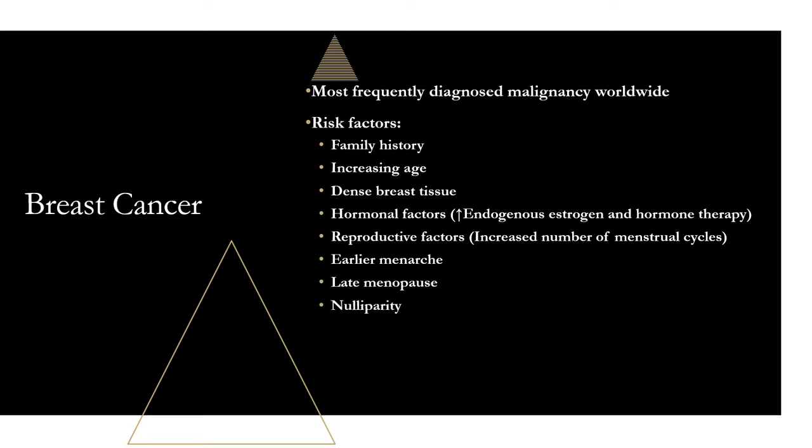Next is nulliparity — a woman who hasn't given birth. While the relationship isn't fully understood, one proposed theory is that these women don't get a break in the estrogen-progesterone cycle. This is also why breastfeeding can have a protective effect and decrease the risk of breast cancer, as it delays the reestablishment of the menstrual cycle. Main takeaway: more menstrual cycles means more breast cancer; less means less.